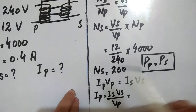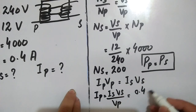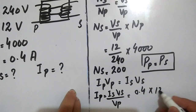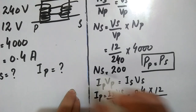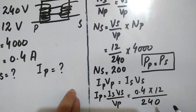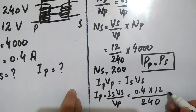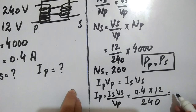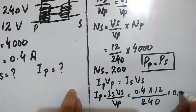Is = 0.4 ampere, Vs = 12, and Vp = 240. When you divide and multiply these values, you get the answer: Ip = (0.4 × 12) / 240 = 0.02 ampere.